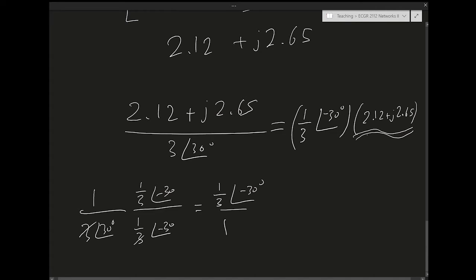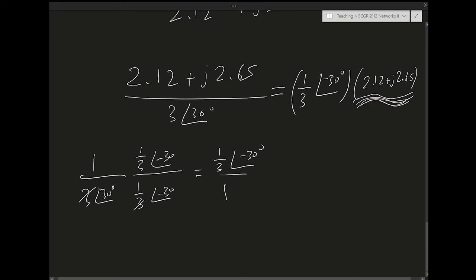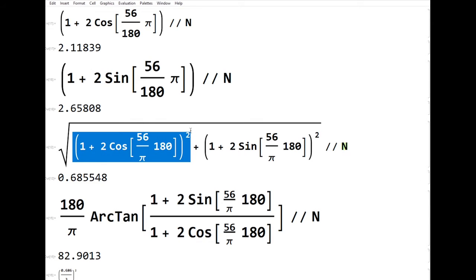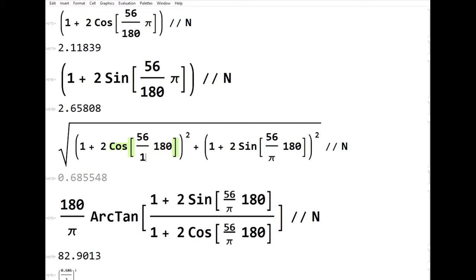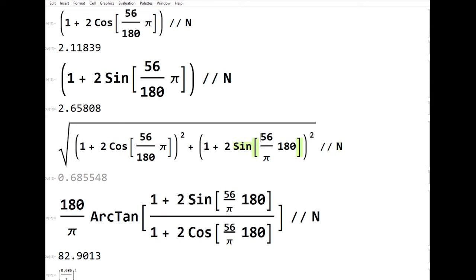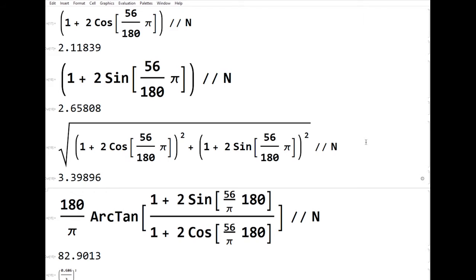To turn 2.12 + j2.65 into polar form, I calculate its magnitude and phase. The magnitude is sqrt(2.12² + 2.65²). Note there's a correction: when using Mathematica I need 180/π to convert degrees to radians. The magnitude comes out to 3.398.